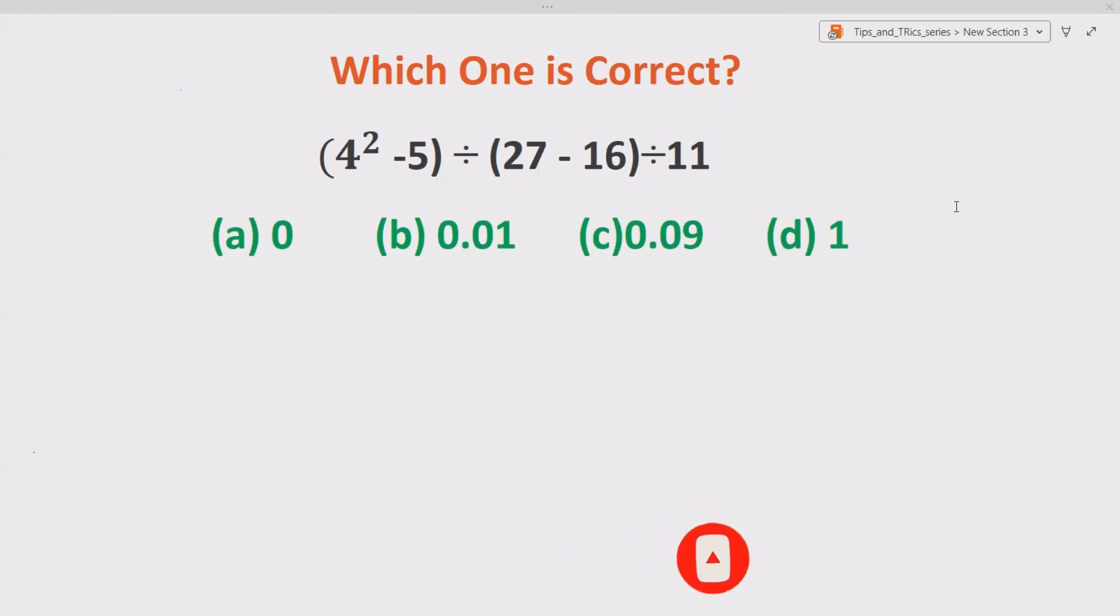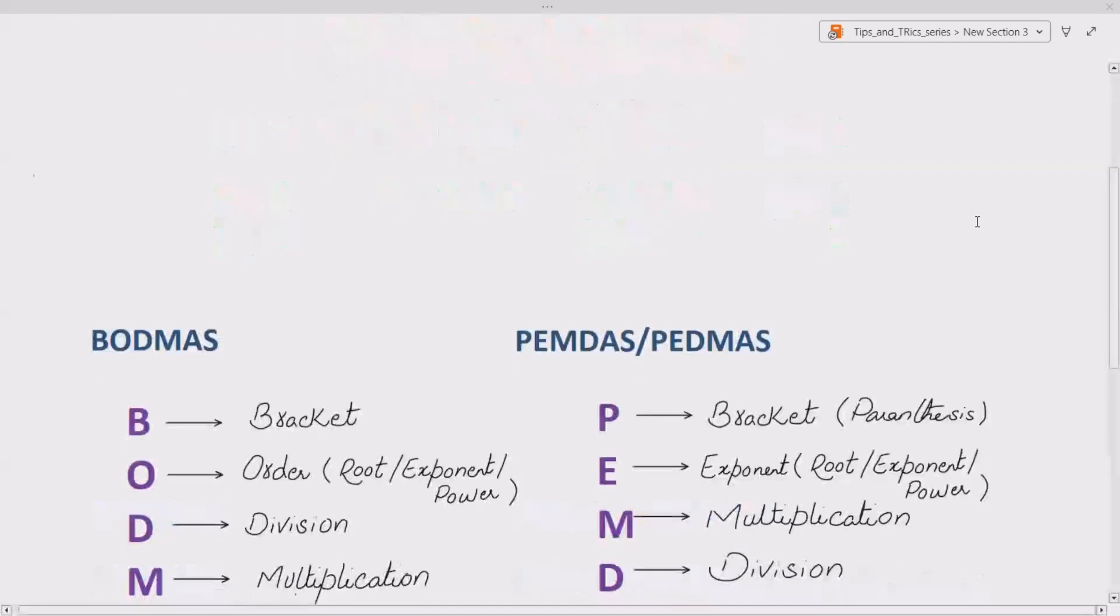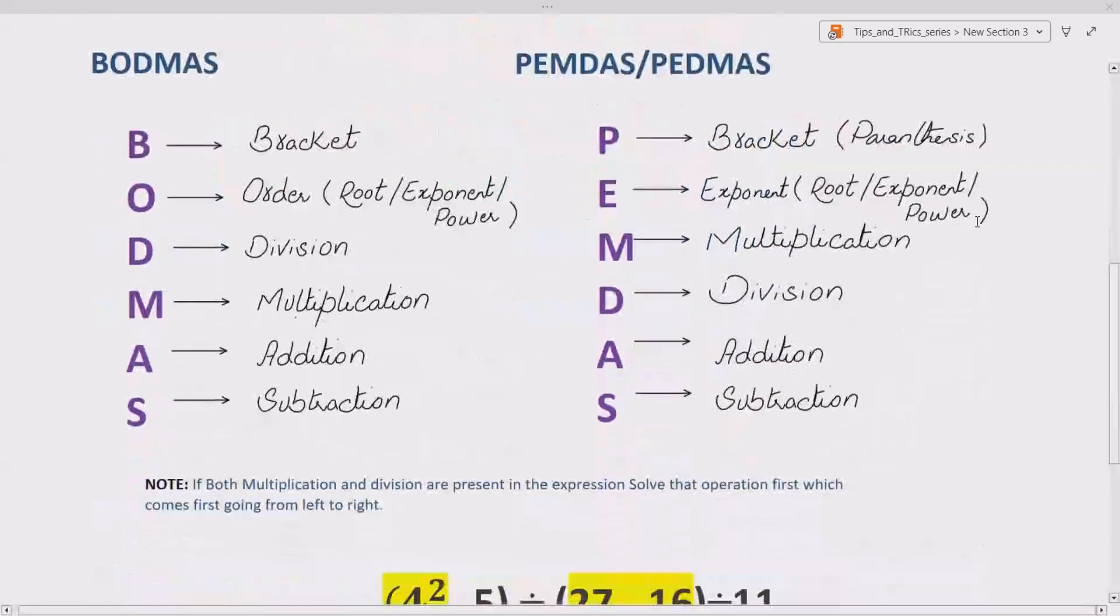Now, before going to the solution, let's first see what is the basic rule to solve any arithmetic expression in Mathematics. To solve any arithmetic expression in Mathematics, we have the basic rule called BODMAS or PEMDAS. BODMAS or PEMDAS says, if you are given any arithmetic expression, solve the bracket first.